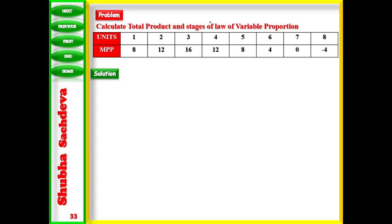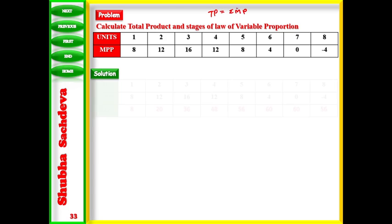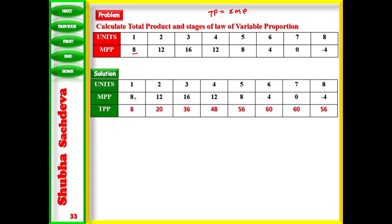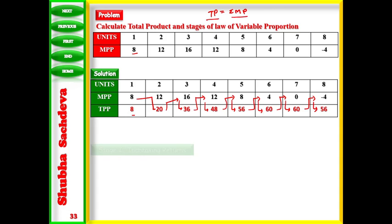Marginal product is given to us. We know that TP equals the summation of MP. So we add: 8 + 12 = 20, 20 + 16 = 36, 36 + 12 = 48, 48 + 8 = 56, 56 + 4 = 60, 60 + 0 = 60, 60 - 4 = 56. This is how we calculate TP from the summation of MP.